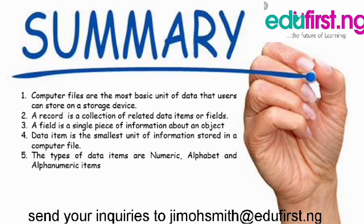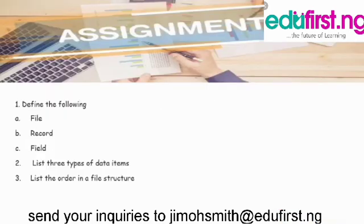Let's do a recap. Computer files are the most basic unit of data users can store on a storage device. A record is a collection of related data items or fields. A field is a single piece of information about an object. Data items are the smallest units of information stored in a computer file. Your exercise is to define file, record, and field; list three types of data items; and list the order in a file structure.